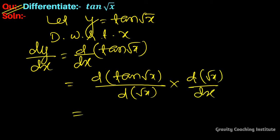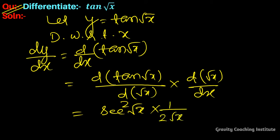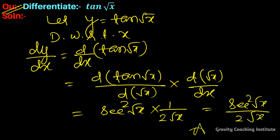We know that the differentiation of tan(x) equals sec²(x), so this becomes sec²(√x) multiplied by 1/(2√x). Therefore, the answer is sec²(√x) / (2√x).